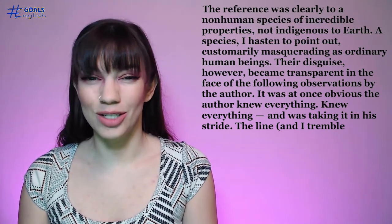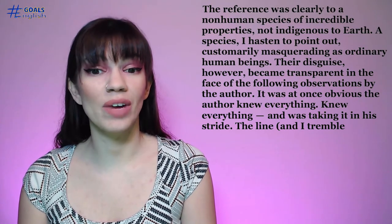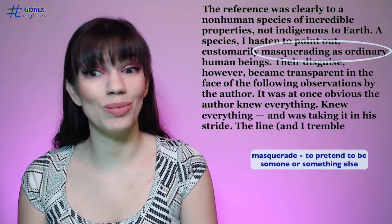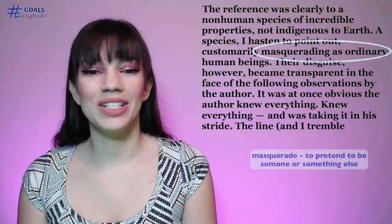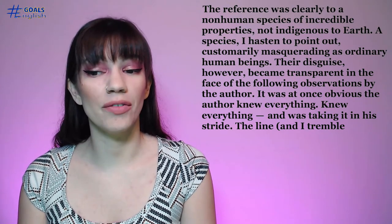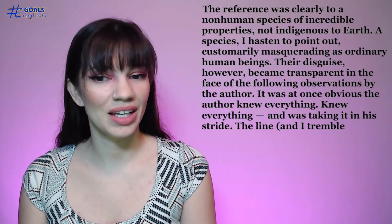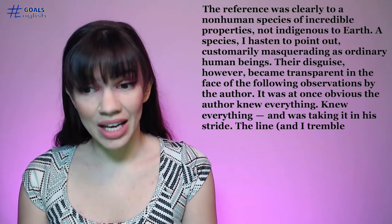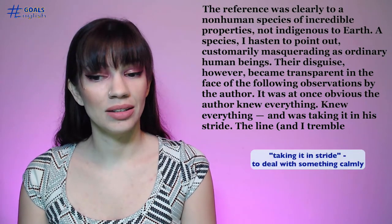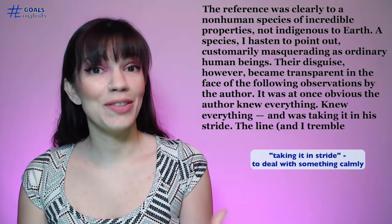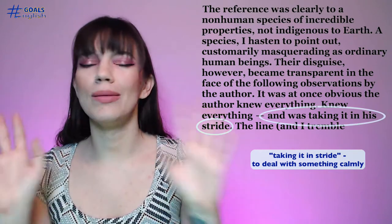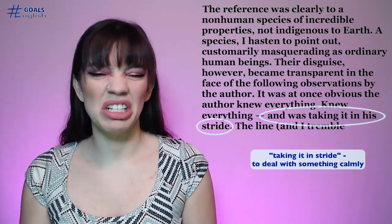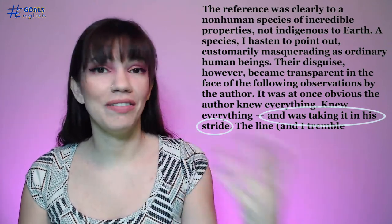'A species, I hasten to point out, customarily masquerading as ordinary human beings.' So he thinks this species of aliens is pretending to be humans. 'Their disguise, however, became transparent in the face of the following observations by the author. It was at once obvious the author knew everything, and was taking it in his stride.' So he's found this book and thinks the author knows all about the aliens and is taking it in his stride — which means it's not a big deal. He's just living normally.